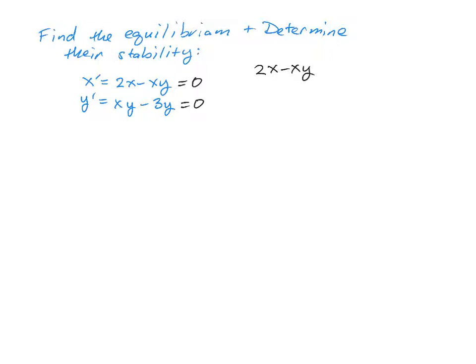So that's going to be 2x minus xy equals 0 and xy minus 3y equals 0. Oftentimes these can be solved by factoring, and you'll notice that each of these factors as x times 2 minus y equals 0, and the second one factors as y times x minus 3 is equal to 0.